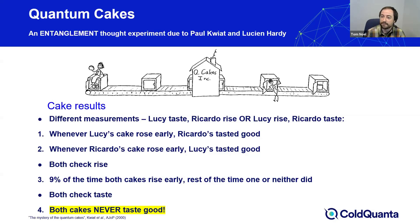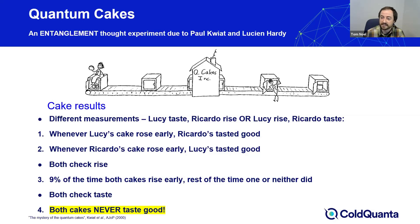In quantum physics, when we have entangled states and non-commuting observables, we're not allowed to simultaneously assign values to both of those non-commuting observables. We're not allowed to make the leap from the observation that 9% of the time both cakes rose early, to a conclusion about what would have happened had they not been measured for rise. They were measured, and that is critical. In presenting the classical logic, I said something like 'early rising and good tasting cakes' — that is already a nonsense statement in quantum mechanics. You can't have an electron with spin up along X and along Z simultaneously.